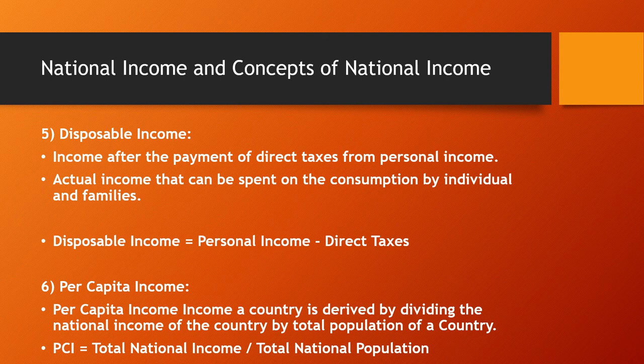Number six: Per Capita Income. Per Capita Income is derived by dividing the national income of the country by the total population of the country. PCI = Total National Income divided by Total National Population.